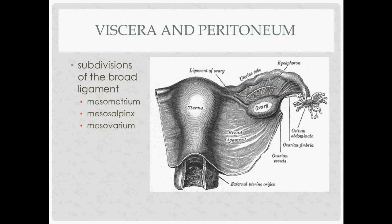Looking at the fallopian tube, the different parts from distal to proximal are: the fimbria (the finger-like distal end), the infundibulum, the ampulla, the isthmus, and then the interstitial part where it enters the uterus. When viewing inside the uterus during hysteroscopy, the opening to the fallopian tube is called the ostia. The most common location for ectopic pregnancies is the ampulla of the fallopian tube.